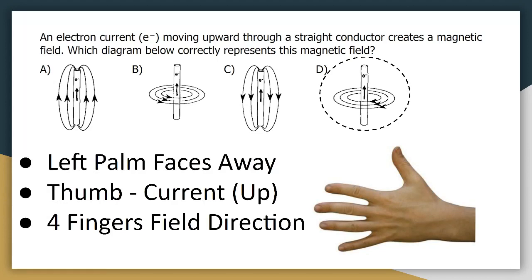When we put our left palm facing away and our thumb pointing in the direction of the current, our four fingers are pointing to the left. This shows the direction the magnetic field in front of the wire points to the left.